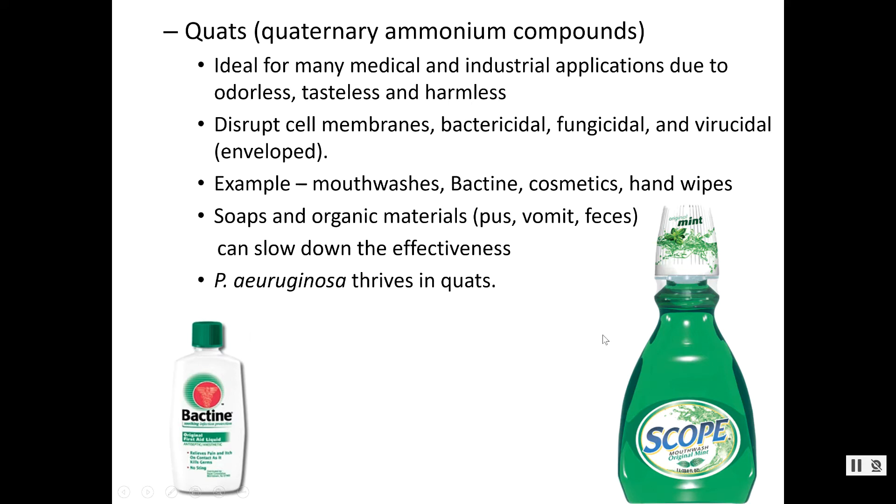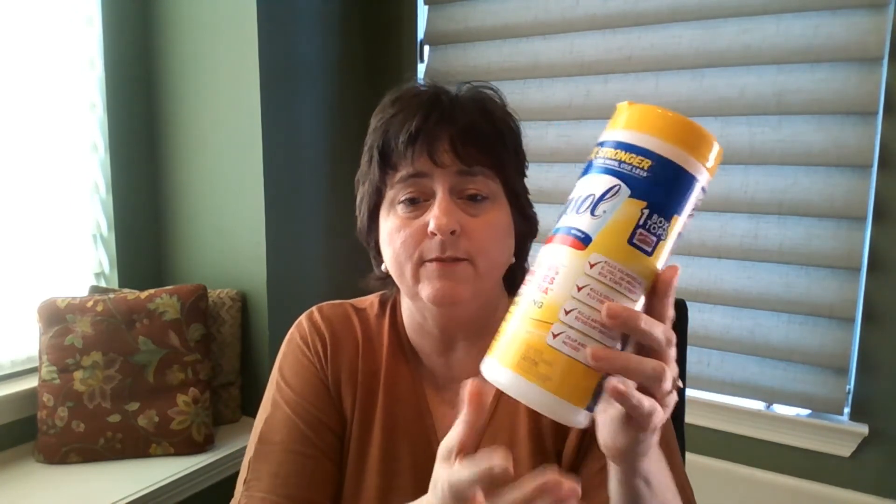Quaternary ammonium compounds are in a lot of products. You find them in mouthwashes and hand wipes. These Lysol wipes — you might think they have Lysol in them, which is a pretty harsh phenol chemical — but Lysol is a brand name that produces many types of disinfectants. If you actually look at the ingredients of these wipes, it's a quaternary ammonium compound, a quat. Your Clorox wipes are the same thing — there's no bleach in Clorox wipes; they're probably quats too.